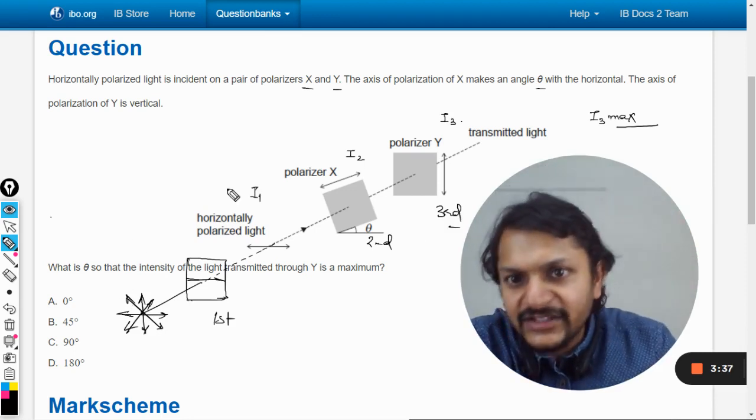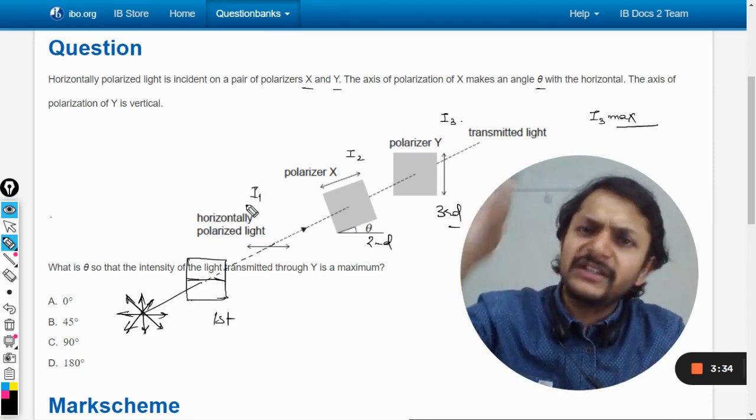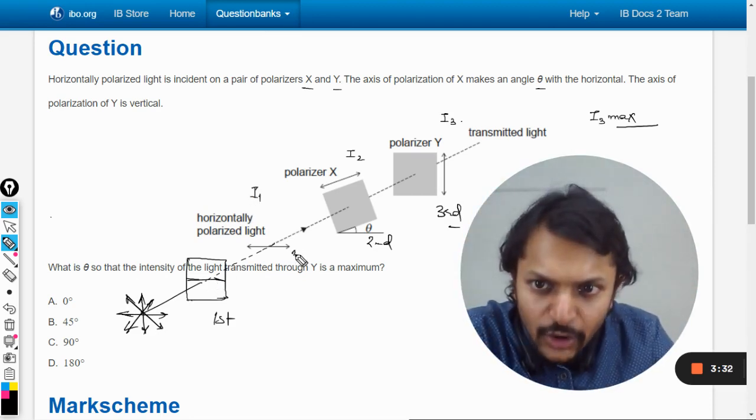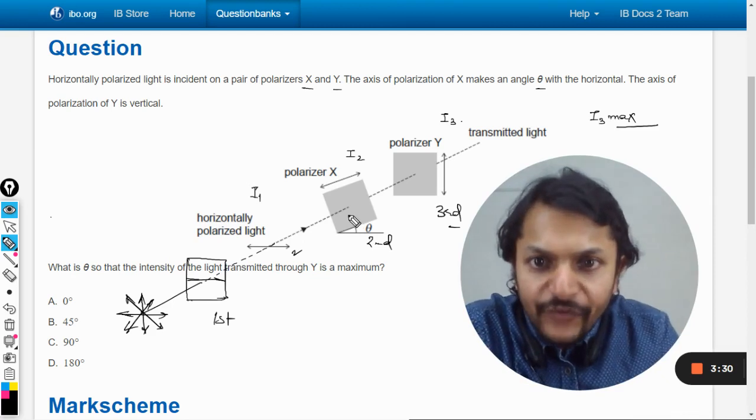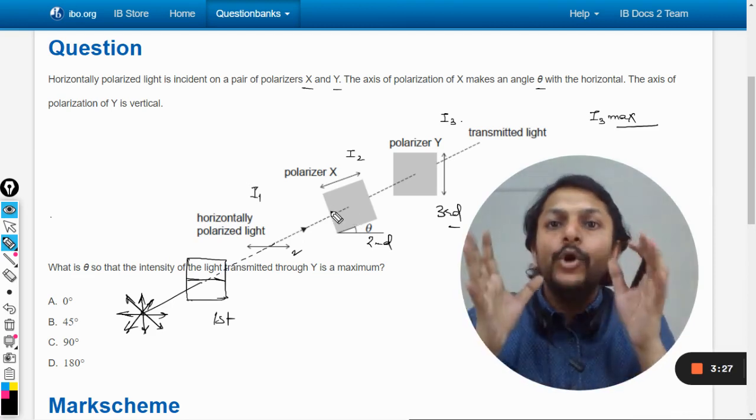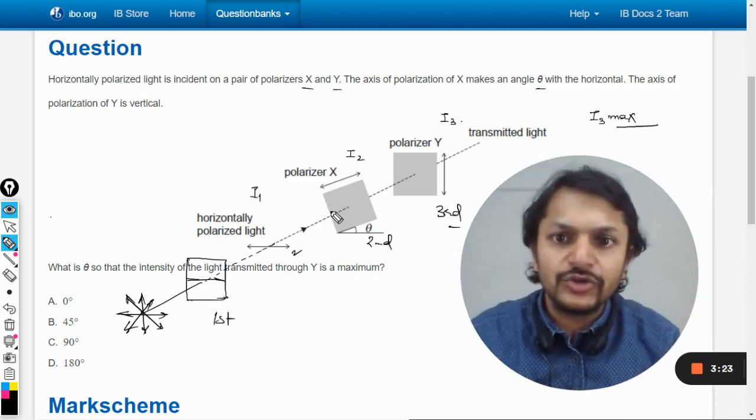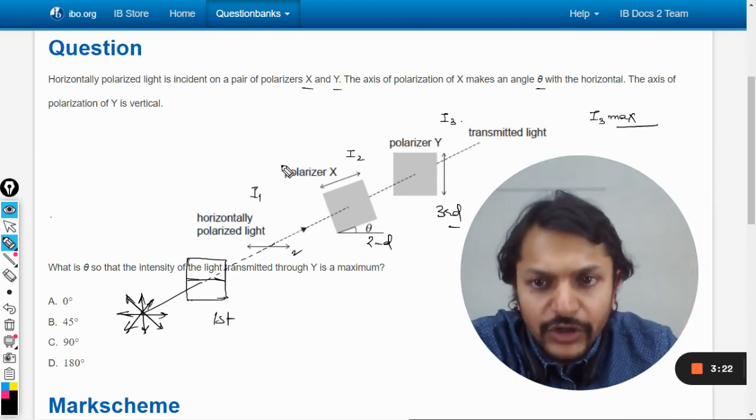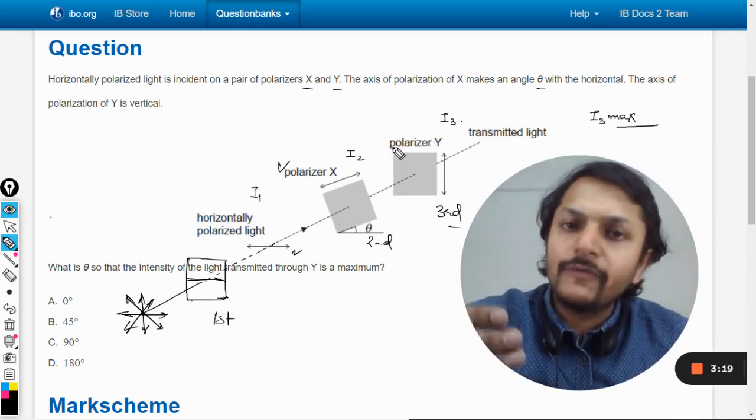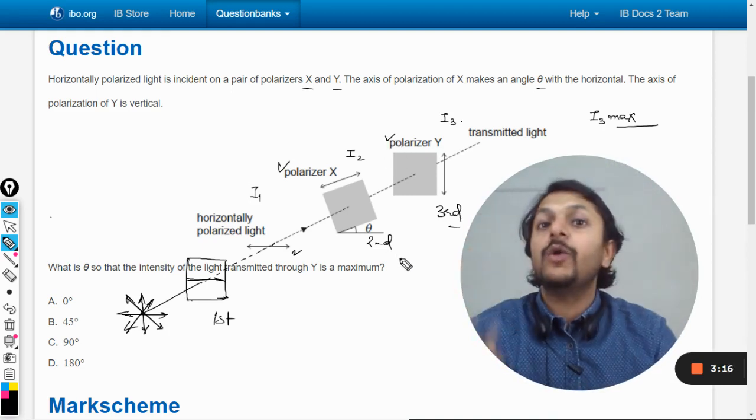Now this intensity will become half here. So whatever is the intensity, anyways we are not talking about that. So this is the horizontally polarized light. Now it is falling on this. Whenever a polarized light falls on a polarizer, Malus's law is used. So Malus's law will be used for the polarizer X and Malus's law will be used the second time for the polarizer Y.